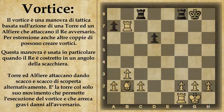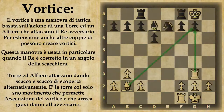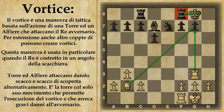Quindi riepilogando, molto importante è non solo questa condizione del re forzato a stare in queste due case, ma anche la presenza di un pezzo in f8, ad esempio in questo caso, che blocchi eventuali vie di scampo per il re nero verso il lato di donna.